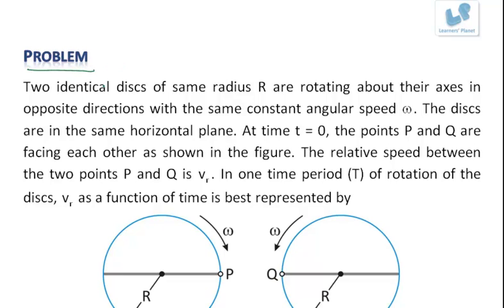Now let us look at the next problem. Two identical disks of same radius R are rotating about their axes in opposite directions with same constant angular speed omega. The disks are in the same horizontal plane.